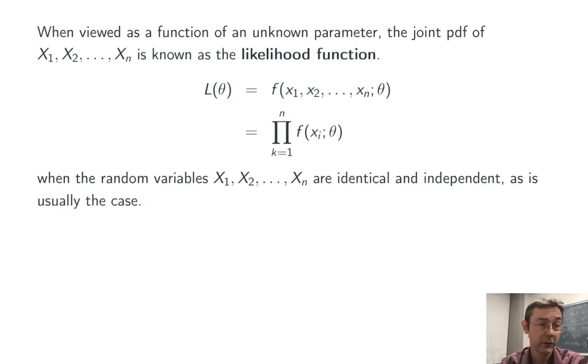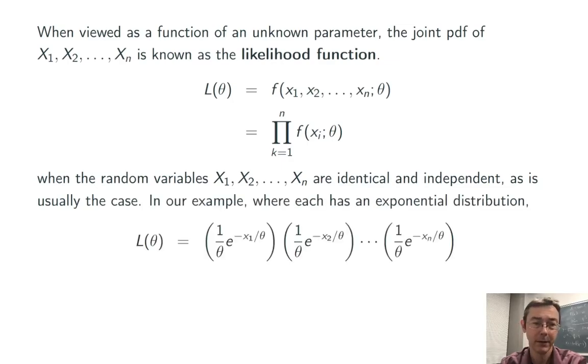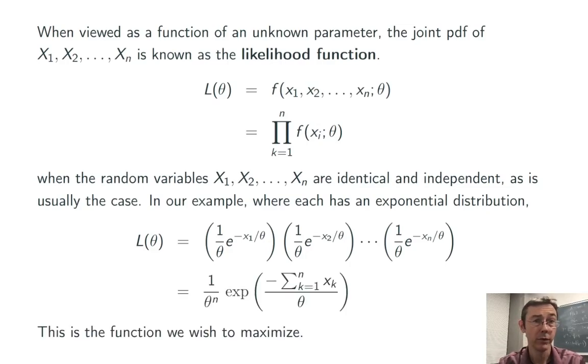In this case, as in most real-world instances, the random variables are independent, so we can write that joint PDF as a product. Moreover, in this case, all of the random variables are identically distributed, so it's a product of different instances of the same function over and over and over again. Since the random variables x1 up to xn have exponential distributions, we get this likelihood function, which can be simplified as 1 over theta to the n, times the exponential function of negative the sum of all the xk's divided by theta.